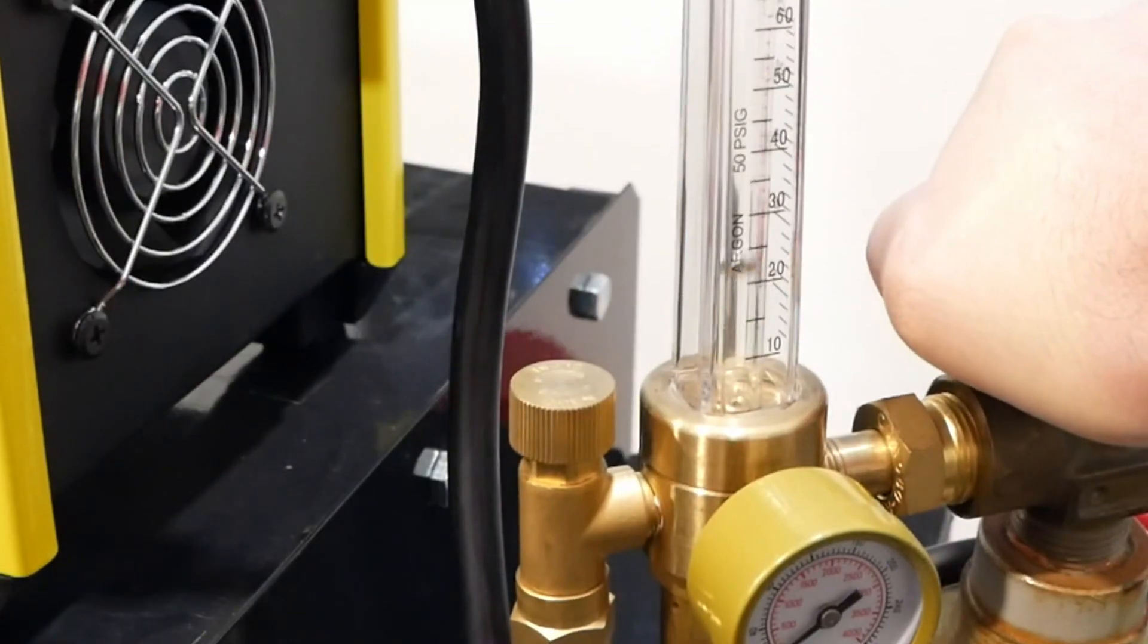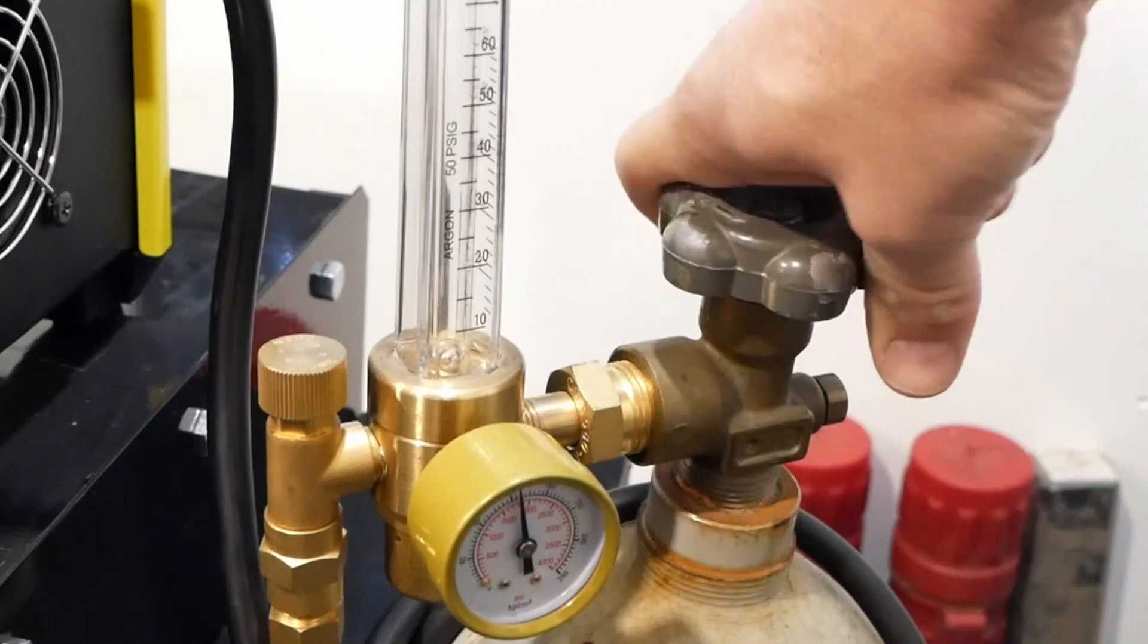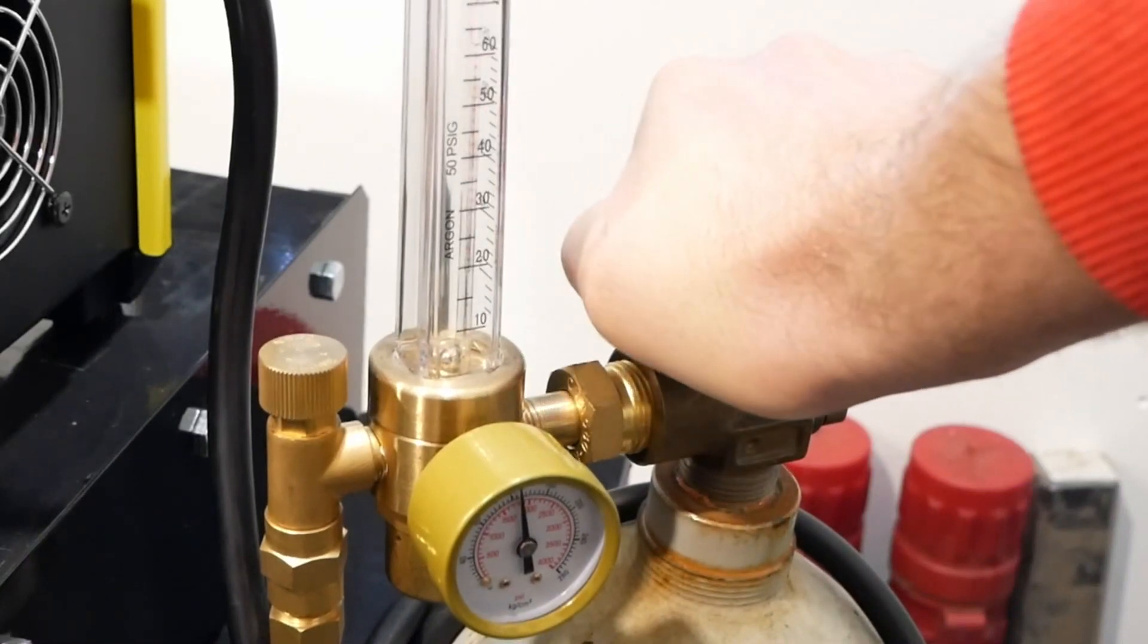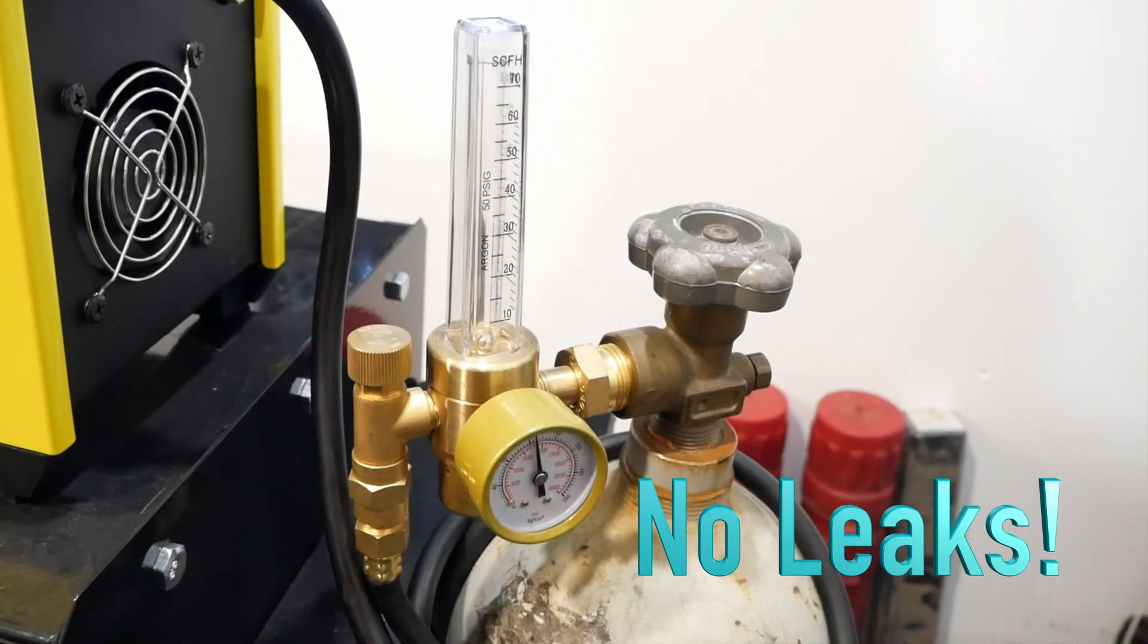Next, we'll open our gas cylinder. We open it very slowly so as to not shock the flow meter. Be sure to open the gas cylinder all the way to the stop. There's a dual seat system, and if you don't open the valve all the way, it can leak.